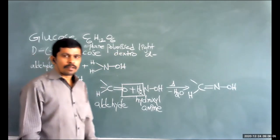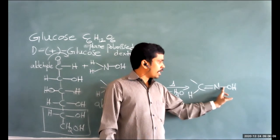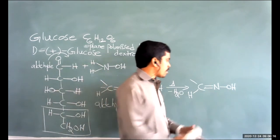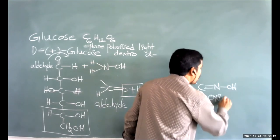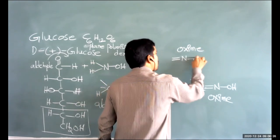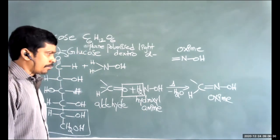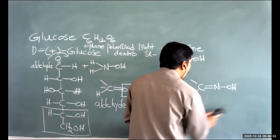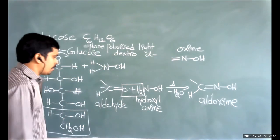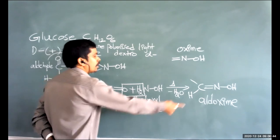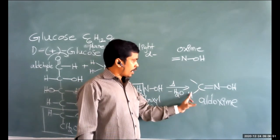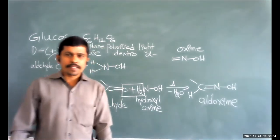The functional group of an aldoxime is: single bond C, single bond H, double bond N, single bond OH. So when D+ glucose reacts with hydroxylamine, the aldehyde group becomes C(H)=N-OH, while the rest of the structure remains unchanged: C2 has OH on right and H on left, C3 has OH on left and H on right, C4 and C5 have OH on right, and C6 has CH2OH.